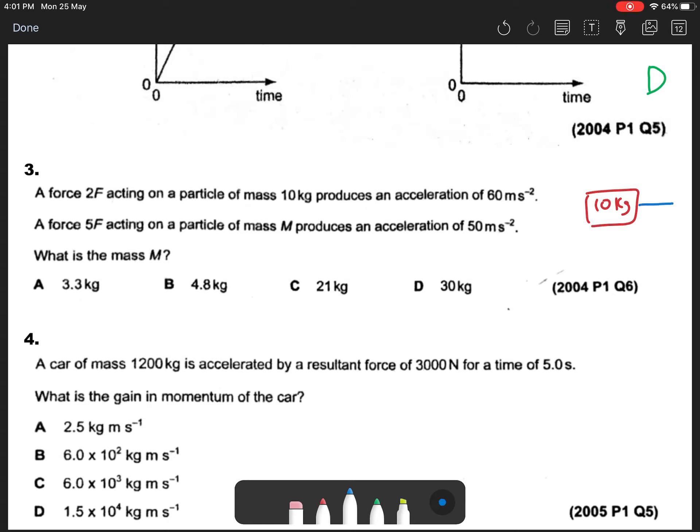First, we need to know what is our F. So assume there's no resistance force. 2F produces 60 meters per second squared acceleration. So we can use F equals M times A. A is 60, M is 10 kilograms. So my resultant force is approximately 600 Newtons. So I can say that 2F is 600 Newtons.